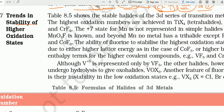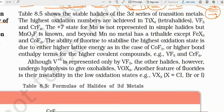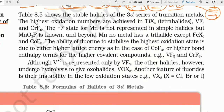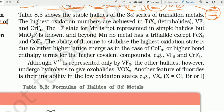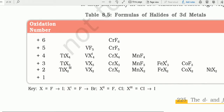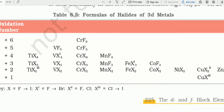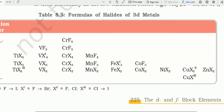Table 8.5 shows halides of 3D series transition metals — scandium, titanium, vanadium, chromium, manganese, iron, cobalt, nickel, copper, zinc — with their halides in different oxidation states from +1 to +6। Table याद रखना ज़रूरी नहीं, बट conclusion याद रखना है।